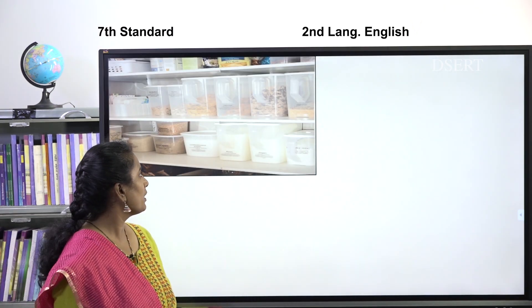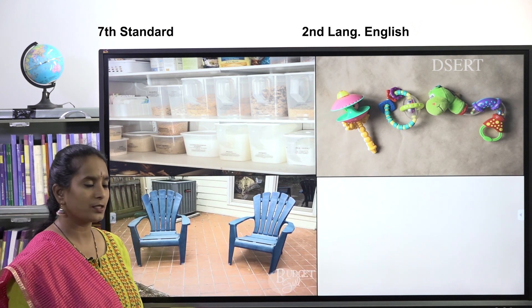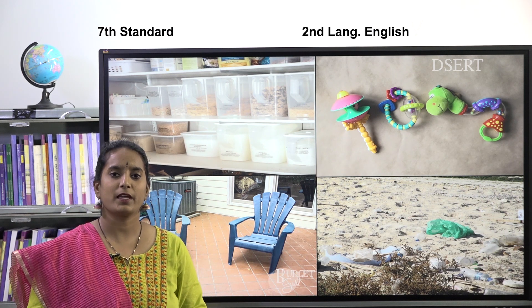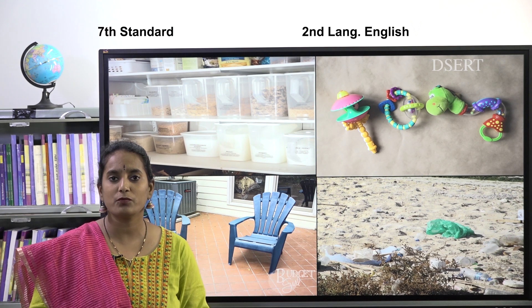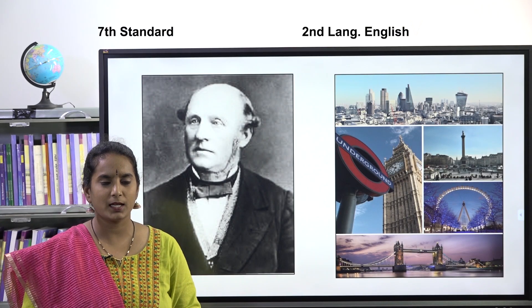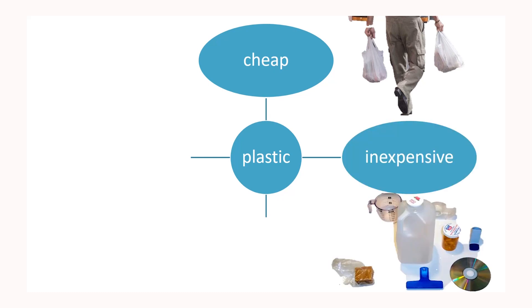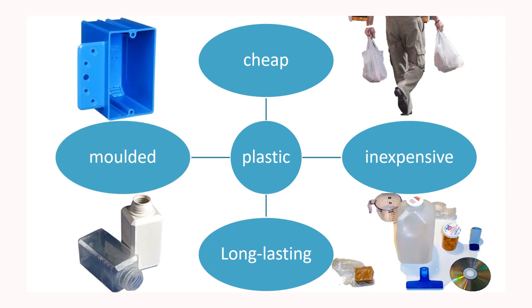In the previous class, we learned that plastics are used everywhere — in the kitchen, in toys, in furniture, and all around us. We also saw a small video about how plastic is made. Do you remember who invented plastic? It was Alexander Parks, who demonstrated plastic at an international exhibition in London. We also learned that plastic is very cheap, inexpensive, long-lasting, and can be molded into any form. Due to these qualities, plastic is a threat to our environment and causes many environmental hazards.